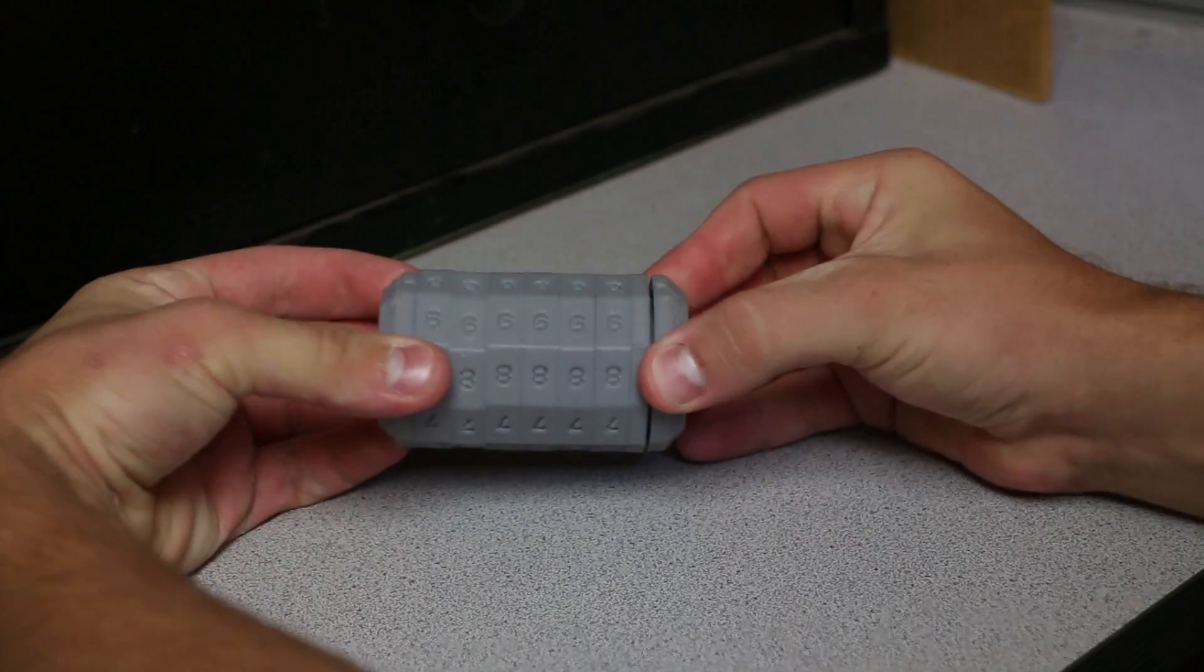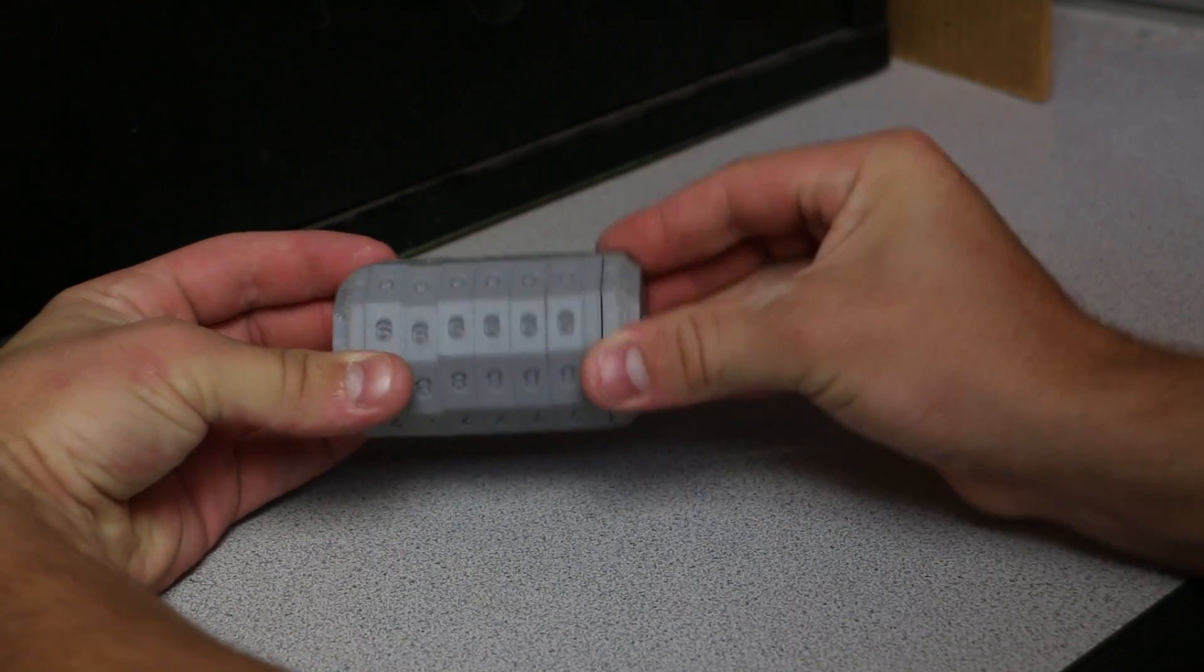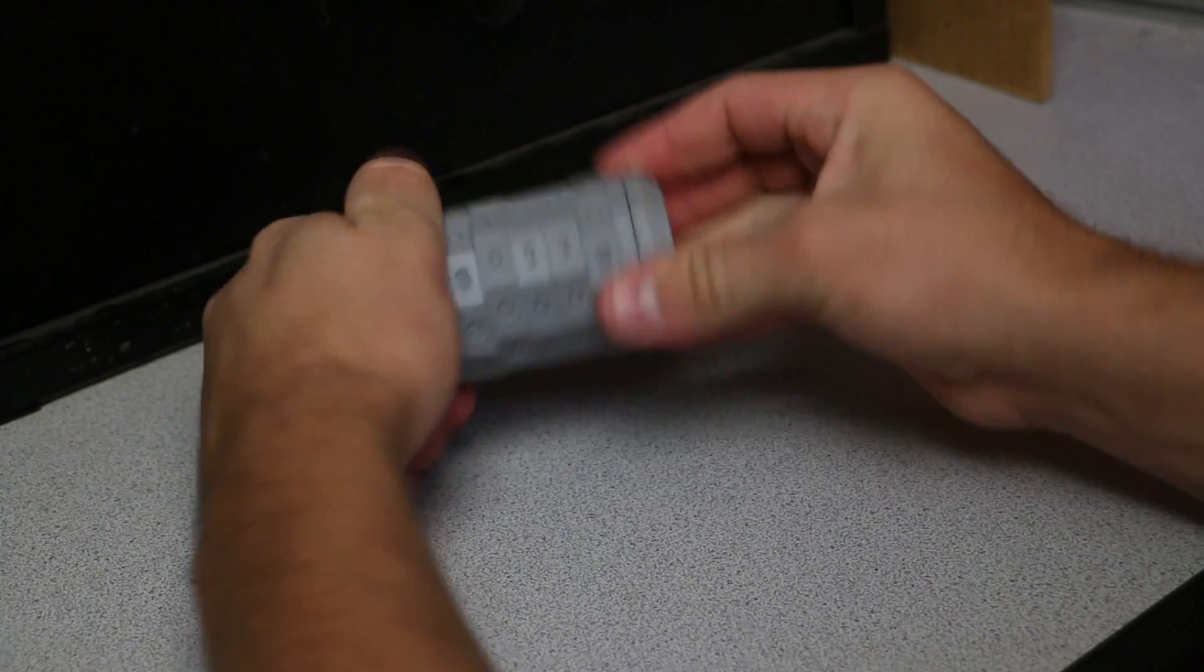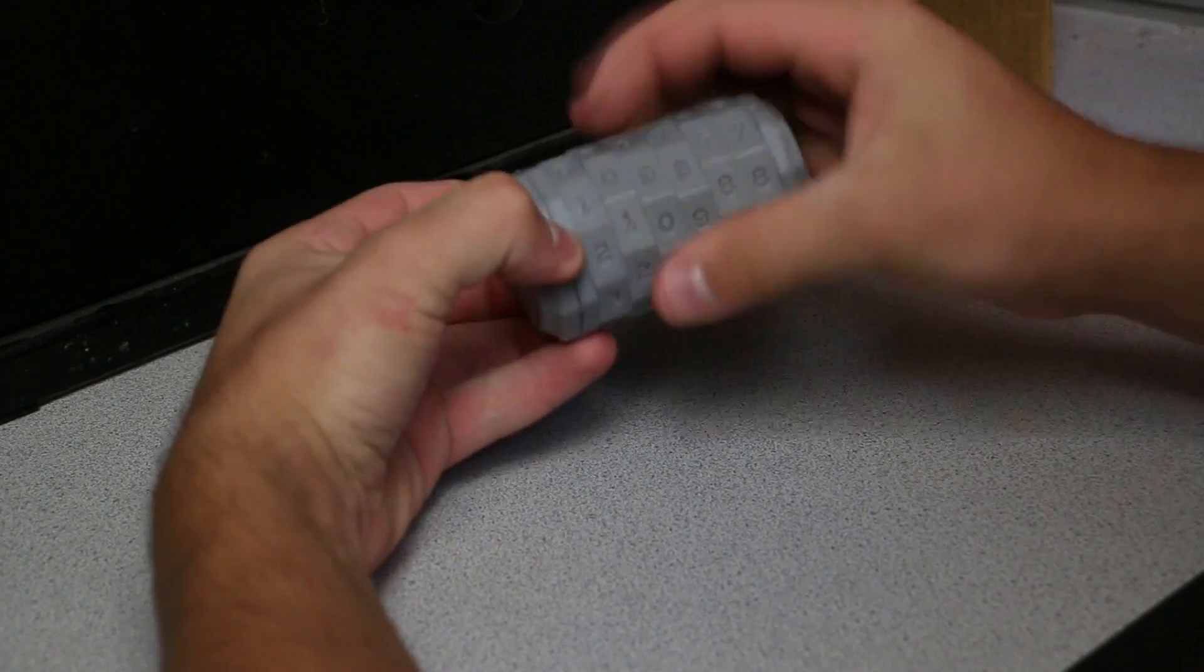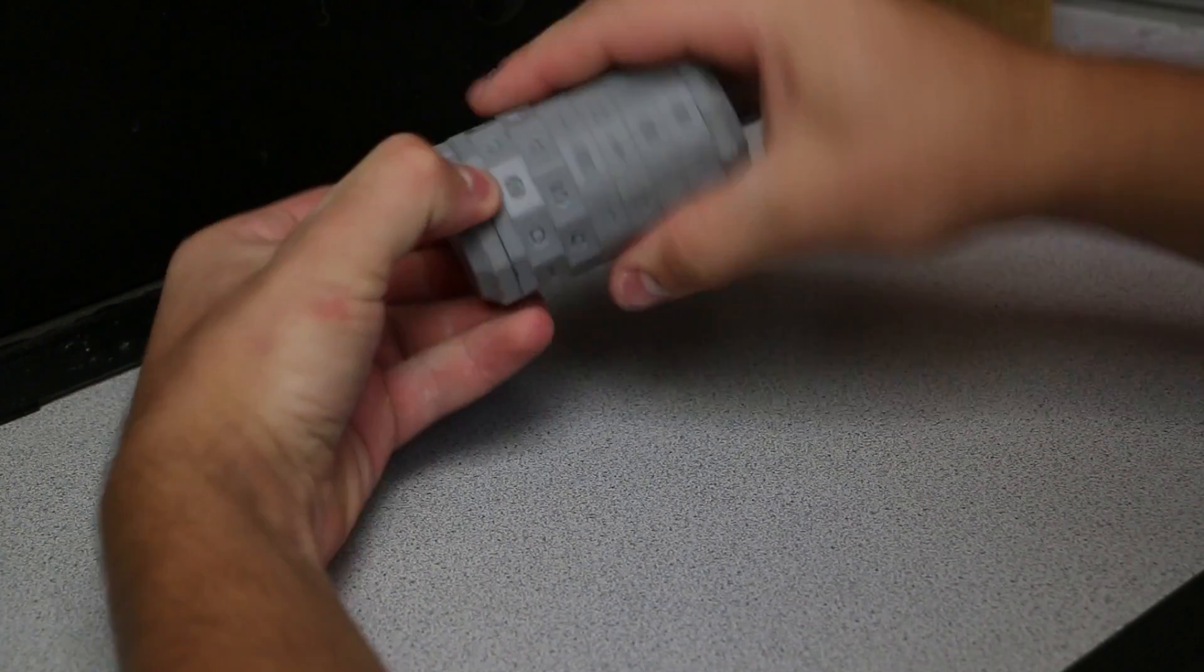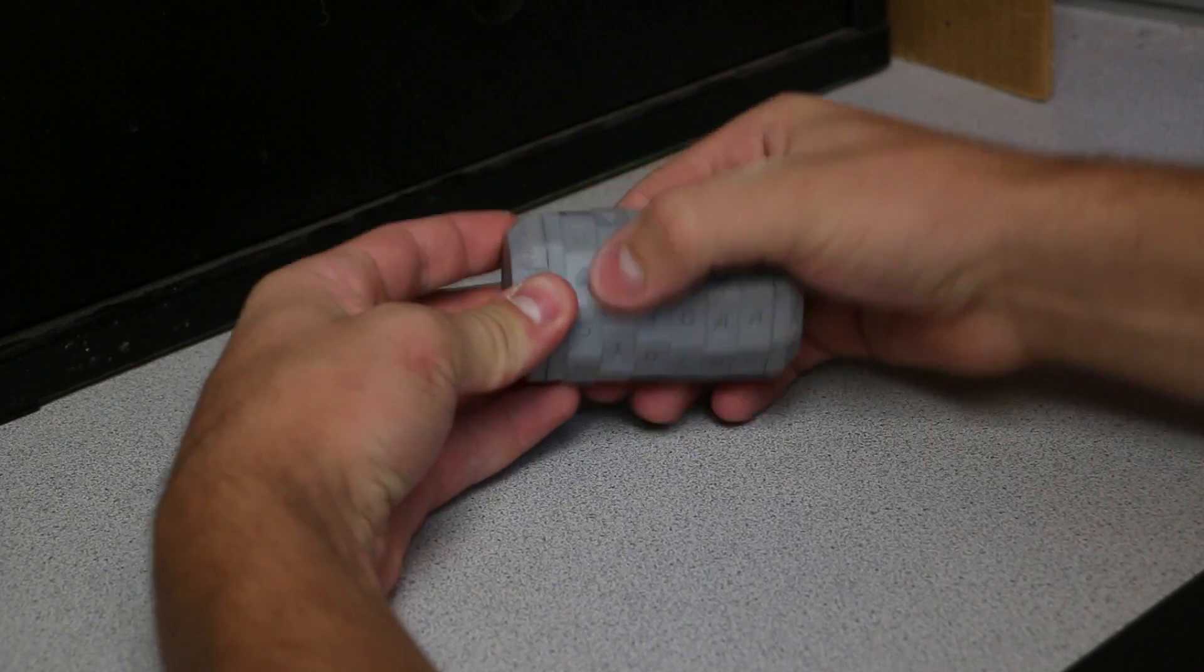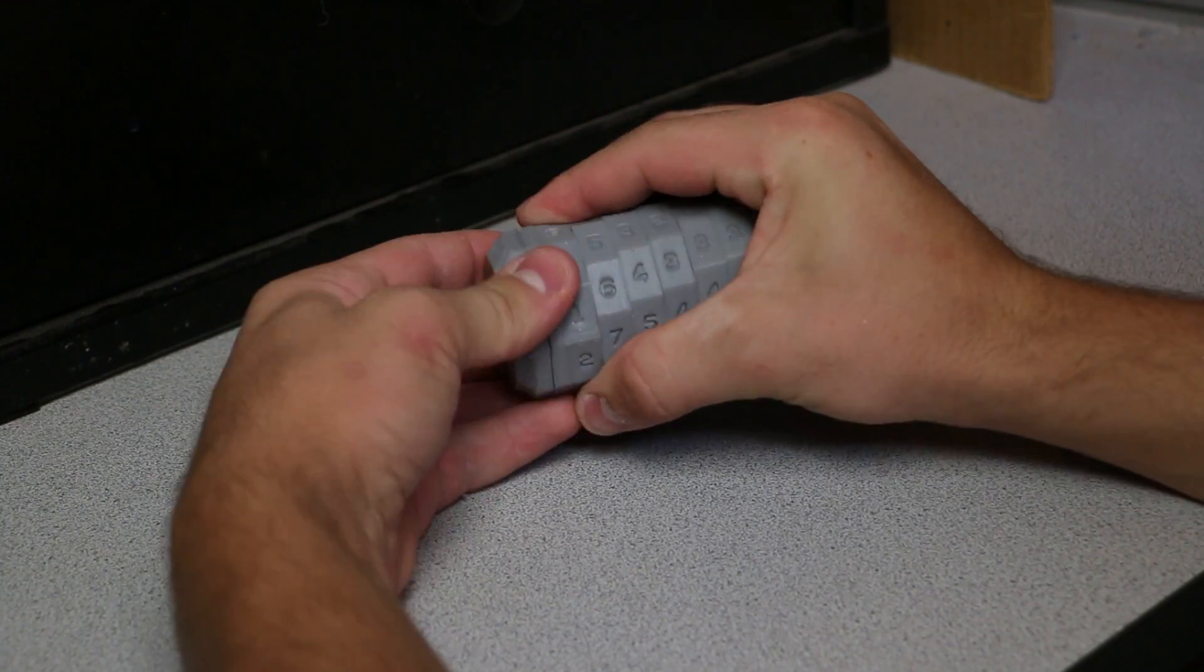So right now you can pull the bar out and in, but once you turn these numbers, there's no way of getting that bar out because the numbers are now mixed up. Now you can't pull it out. And when you set it to the right combination, which is all zeros.